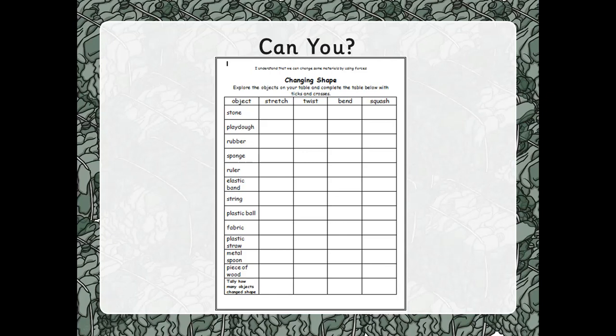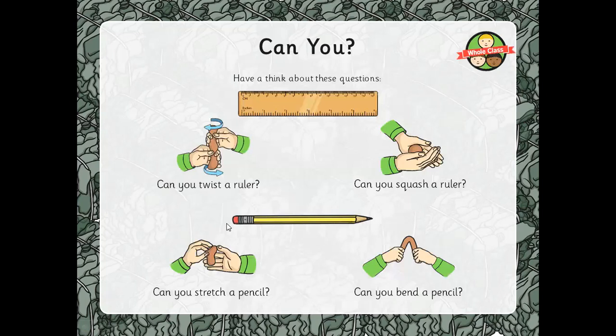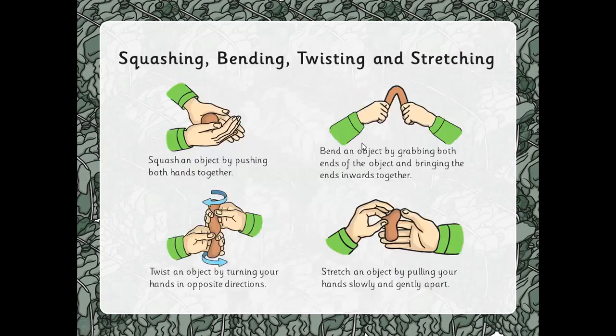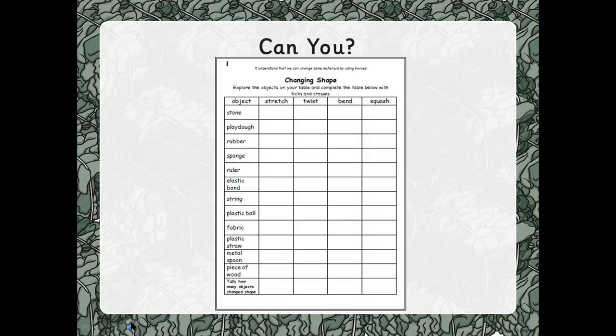As I say, if you can't find all those things, that's absolutely fine. But if you can find as many of them as possible, you then need to try stretching them, twisting them, bending them and squashing them. And remember children to refer back in the video to how we might squash, bend, twist and stretch our objects.